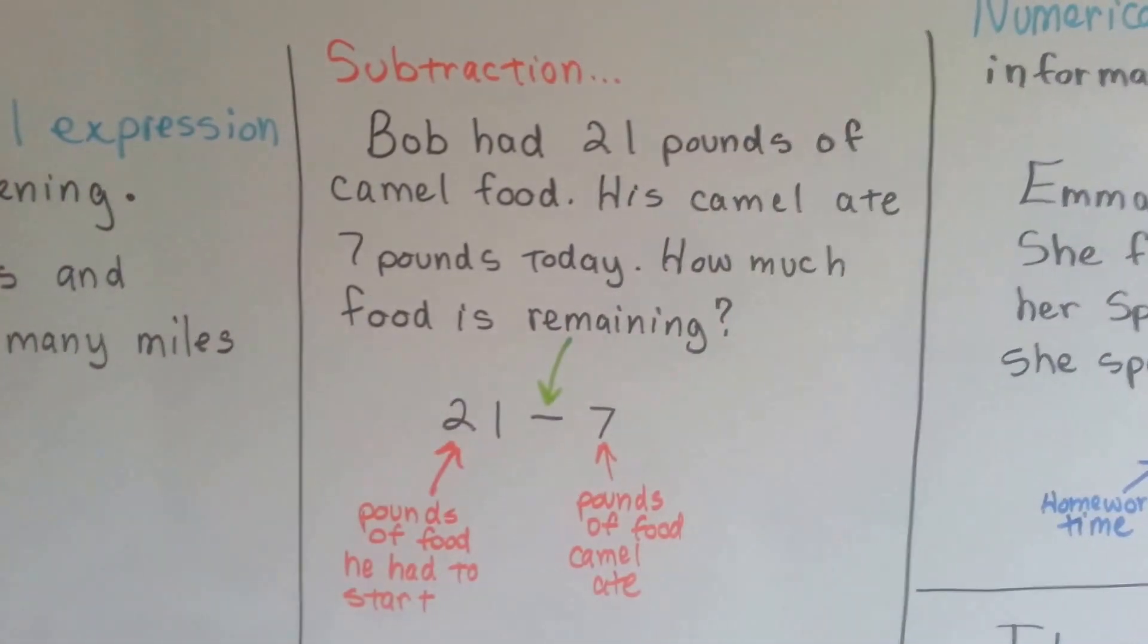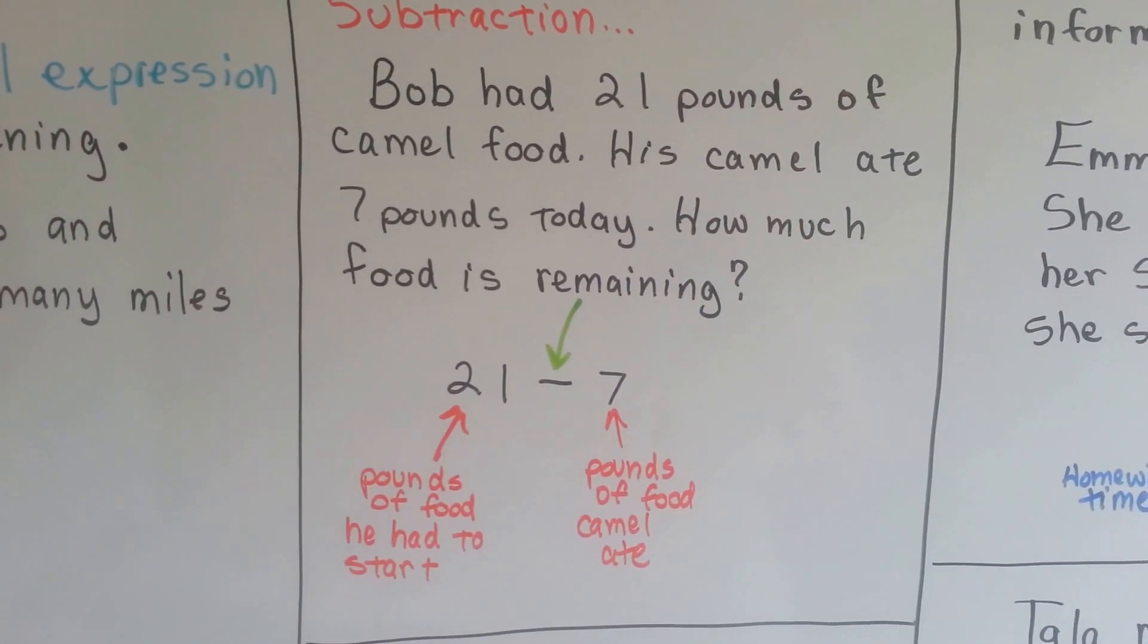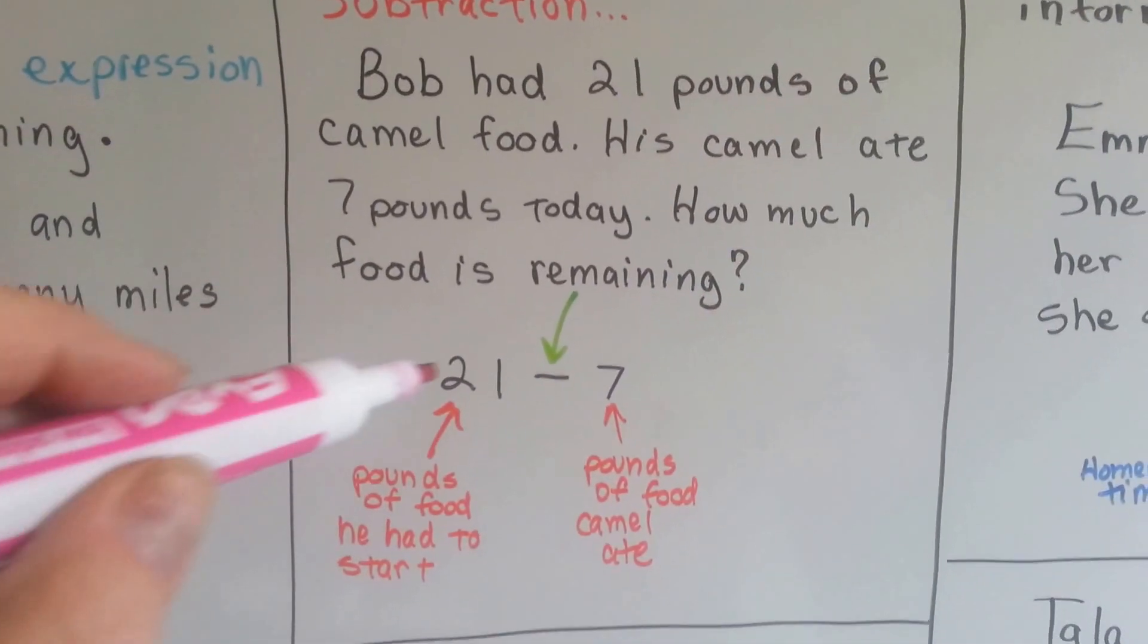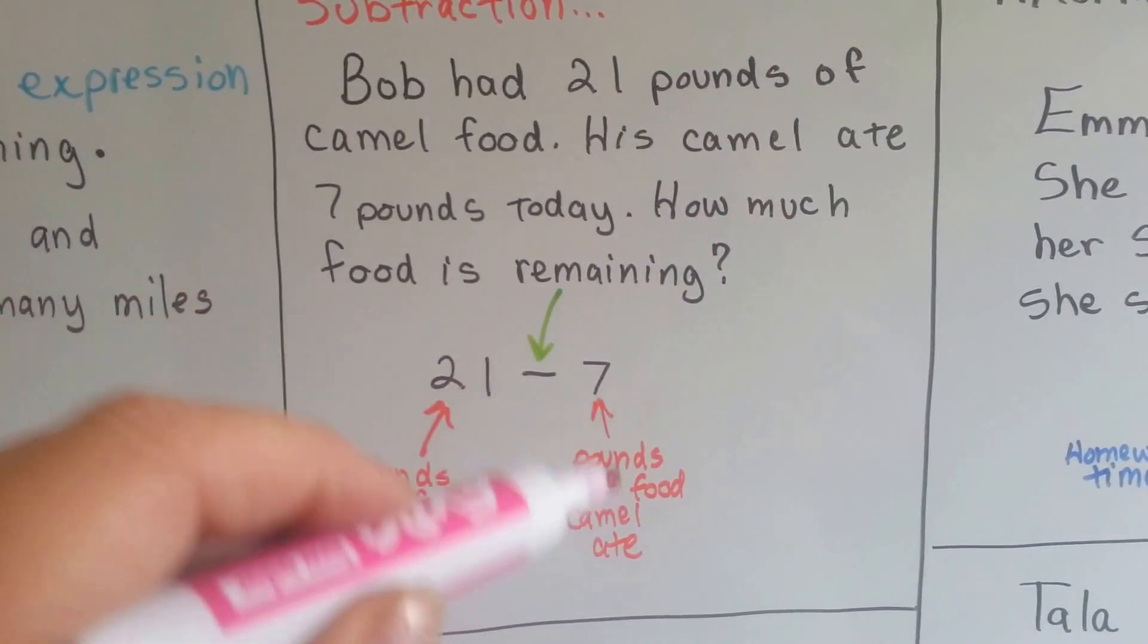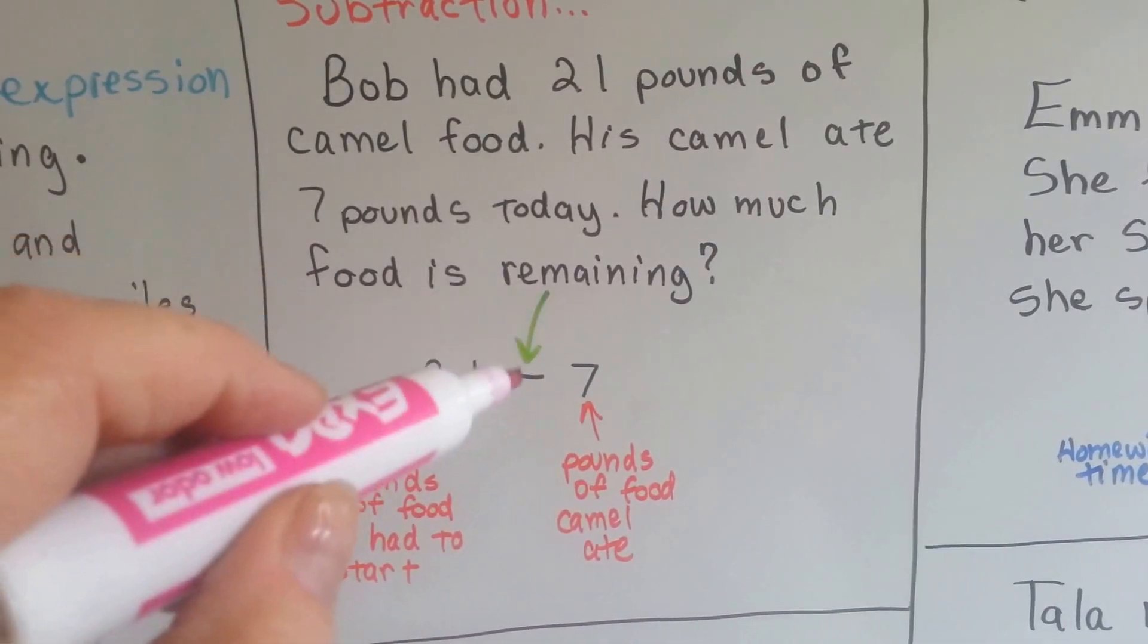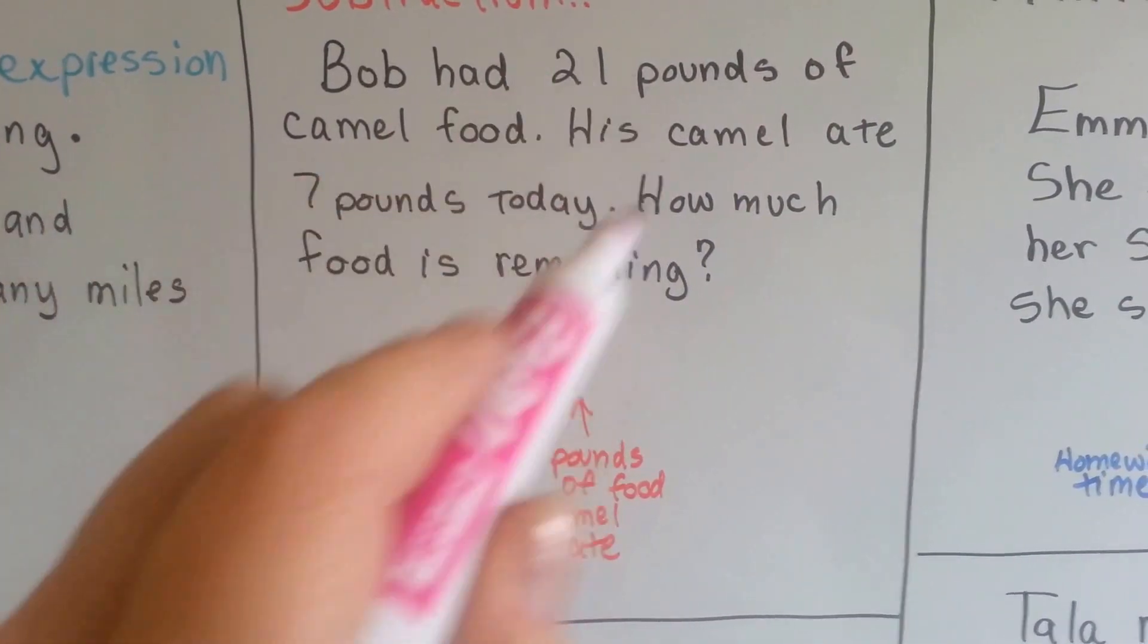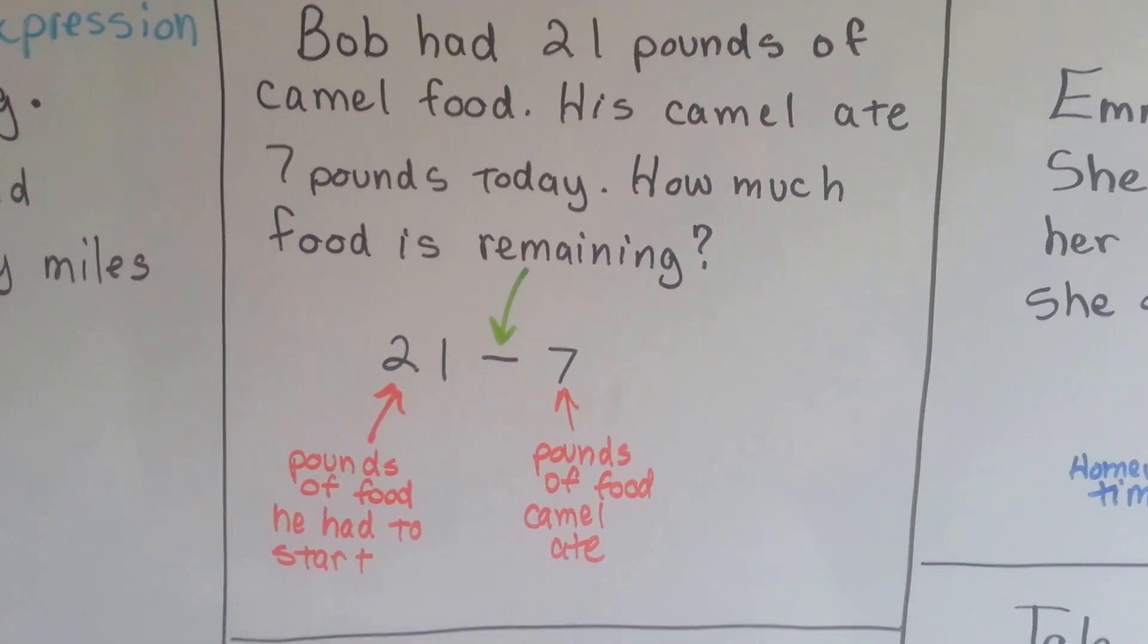We can do subtraction numerical expressions. Bob had 21 pounds of camel food. His camel ate 7 pounds today. How much food is remaining? 21 is the pounds of food he had to start with. 7 pounds is the amount that the camel ate today. And the word remaining tells us that we're going to have to subtract. So 21 minus 7 is a numerical expression telling this story. See? It's a subtraction story.